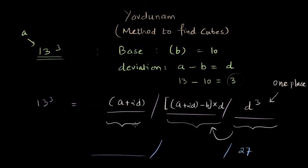The leftmost part is A plus 2D. So A is 13, then two times D, D is 3. So this is going to be 13 plus 6, which is 19. That's our leftmost part.